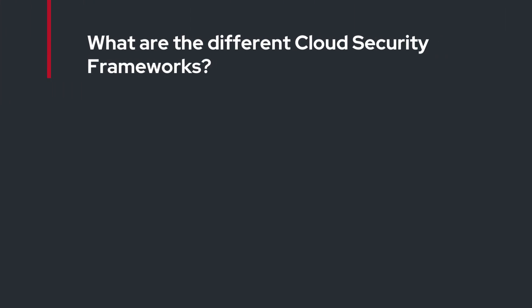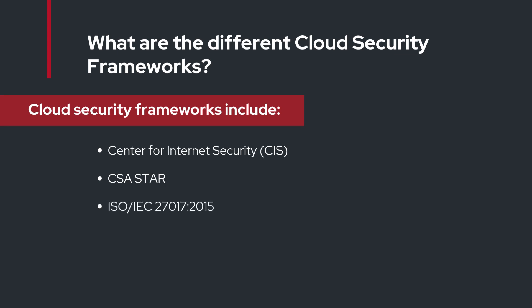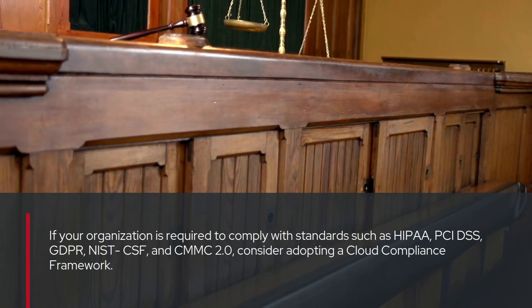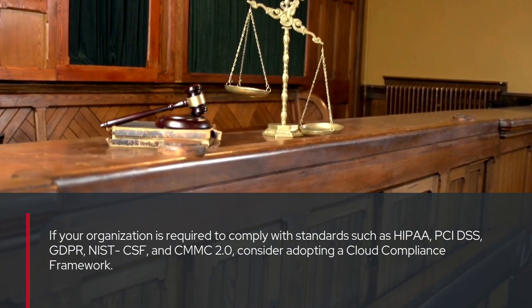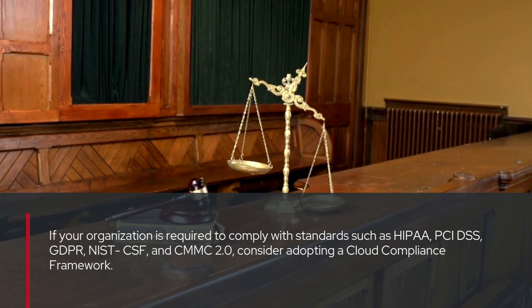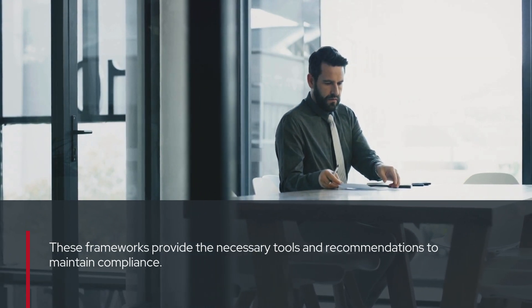What are the different cloud security frameworks? Cloud security frameworks include the Center for Internet Security (CIS), CSA STAR, ISO/IEC 27017:2015, AWS Foundational Security Best Practices Standard, and Microsoft Cloud Security Benchmarks. If your organization is required to comply with standards such as HIPAA, PCI DSS, GDPR, NIST CSF, and CMMC 2.0, consider adopting a cloud compliance framework. These frameworks provide the necessary tools and recommendations to maintain compliance.